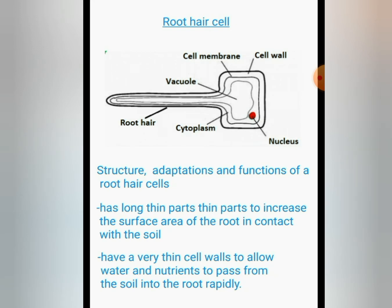Here we want to look at the structure, adaptations, and functions of a root hair cell. It has a long thin path to increase the surface area of the root in contact with the soil. It also has very thin cell walls to allow water and nutrients to pass from the soil. As you can see in the picture, the root hair is very long to increase the surface area in contact with the soil.